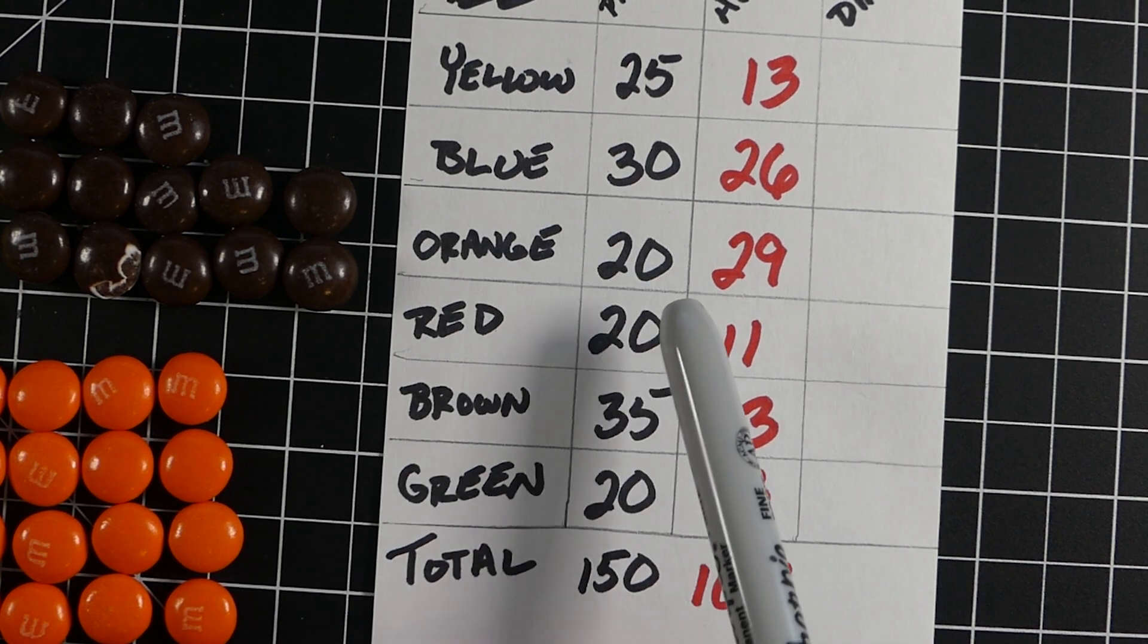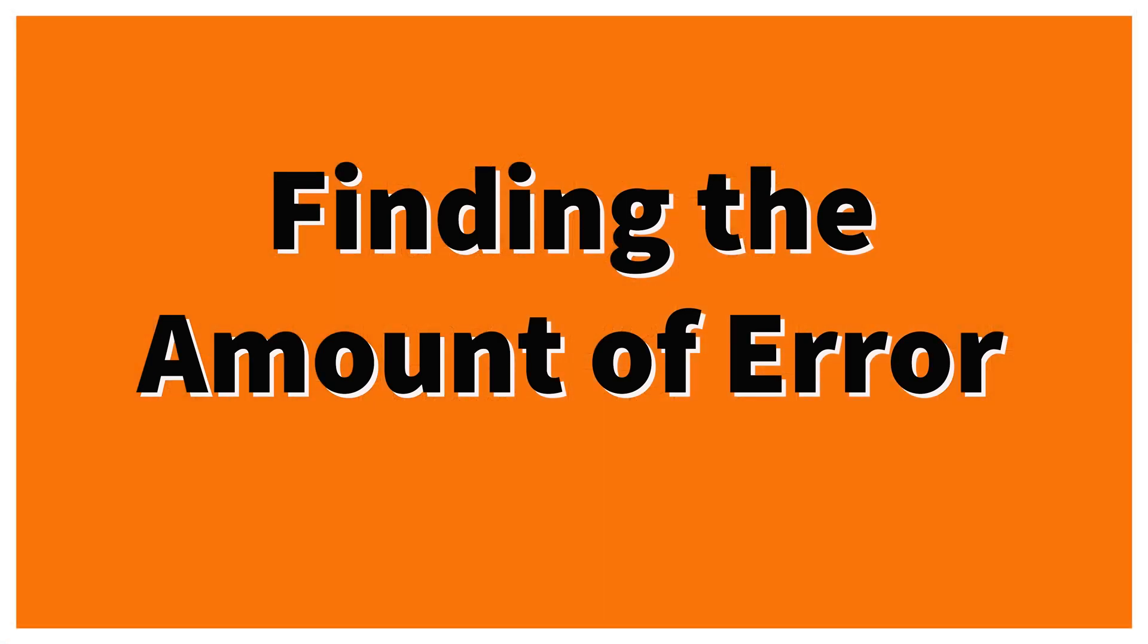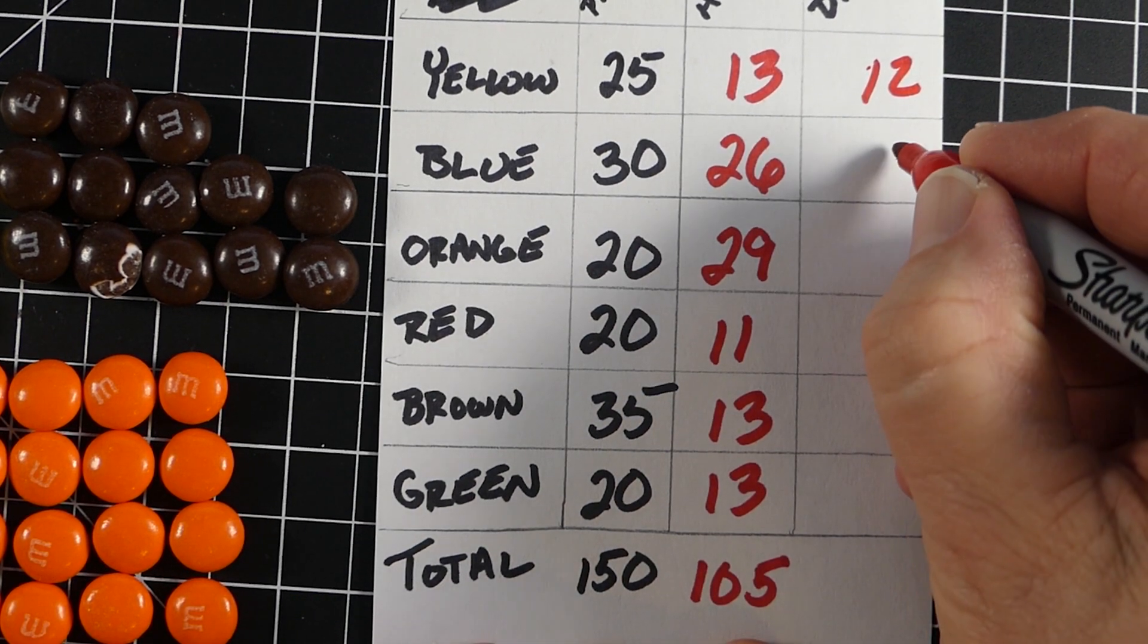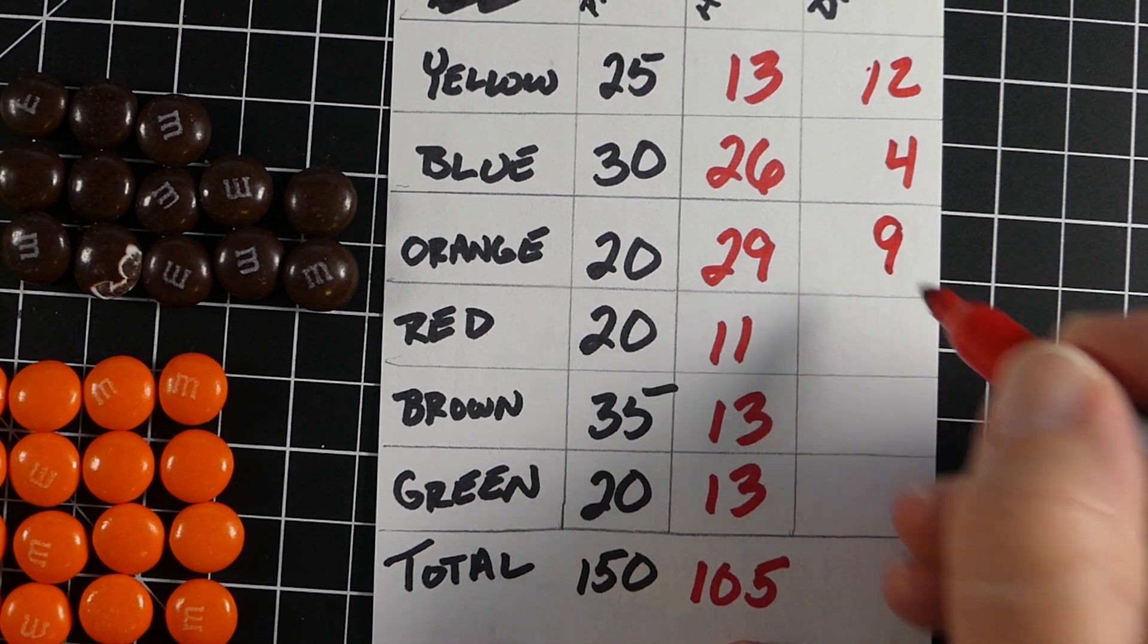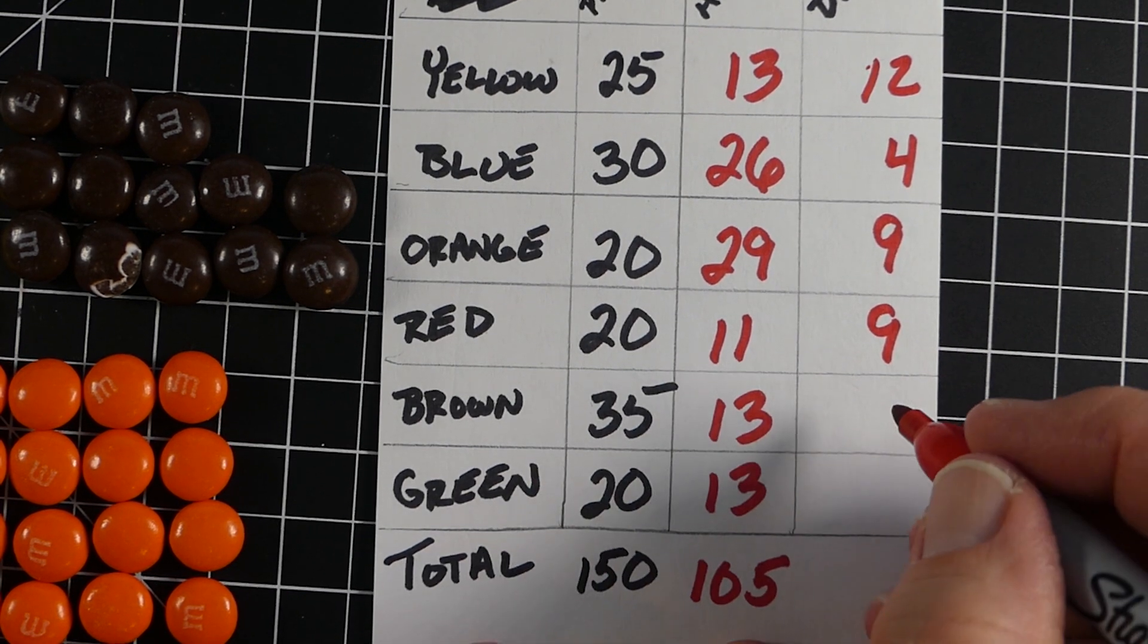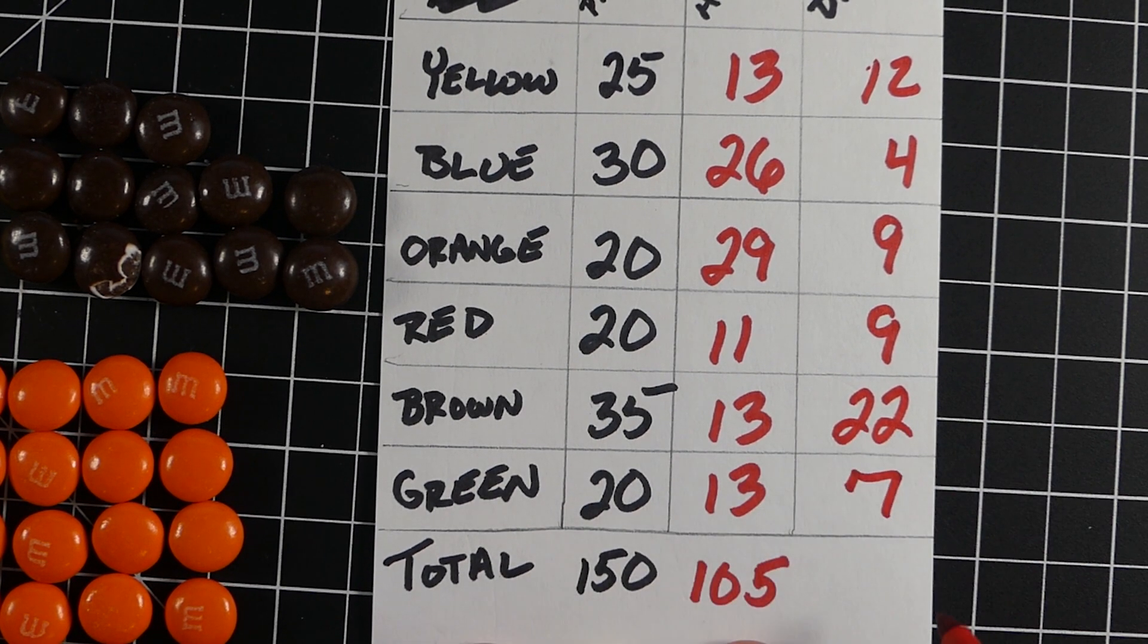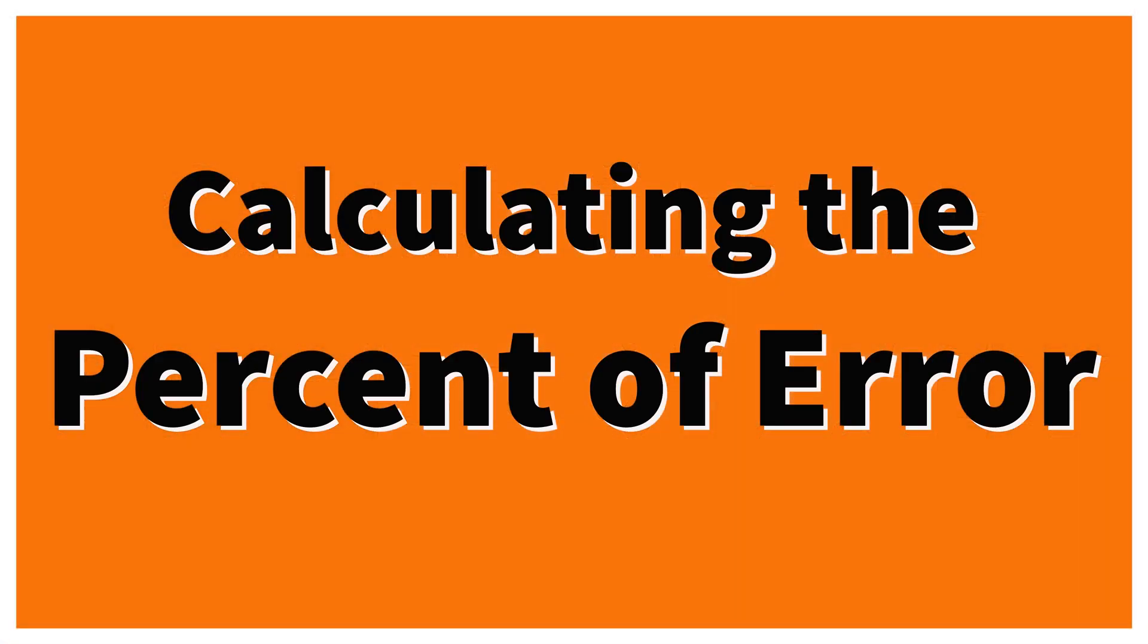Next we'll find the amount of my error or mistake. The way we find amount of error is simple - just find the difference between what I predicted and what actually happened. For yellow I subtracted 25 and 13, there's a difference of 12. For orange, 20 minus 29 would give negative 9, so we use absolute values - each one's just a positive. You can see the differences for each one.